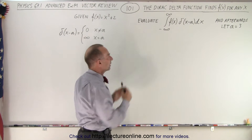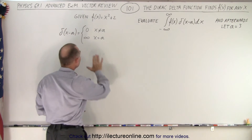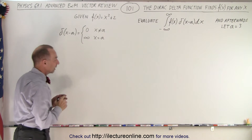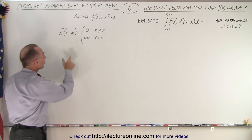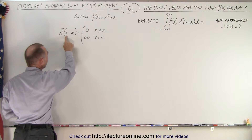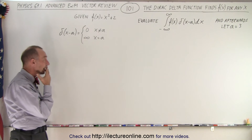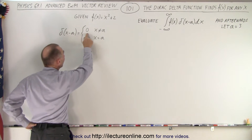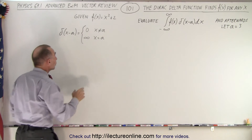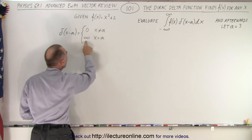We're going to evaluate that integral and then let a equal 3 to see what that actually means. We need to understand what the delta function means when written as delta of x minus a. The delta function equals infinity when what's inside the parentheses equals zero. So it equals zero for all values when x is not equal to a, and infinity when x equals a.